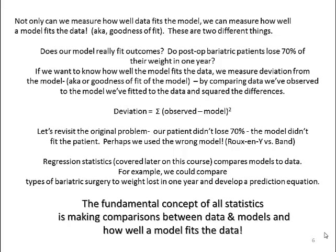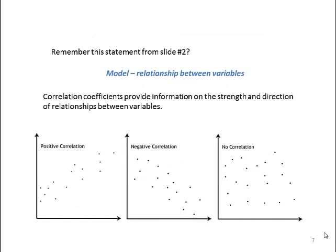The fundamental concept of all statistics is making comparisons between data and models and how well models fit the data. Remember: a model is a relationship between variables. Correlation coefficients provide information on the strength and direction of relationships between variables. Correlation coefficients are introduced in Chapter 5.